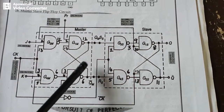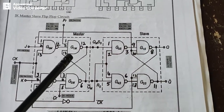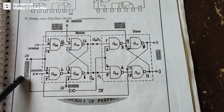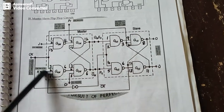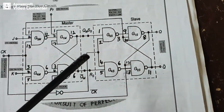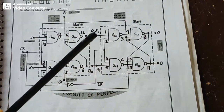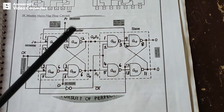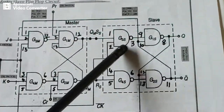In the JK master-slave configuration we use two JK flip-flops. The problem with a single JK flip-flop is that when J equals 1, K equals 1, and clock is 1, the output toggles continuously, causing uncertainty — this is called the race-around condition. To avoid the race-around condition we use two flip-flops: one called the master and the other called the slave.